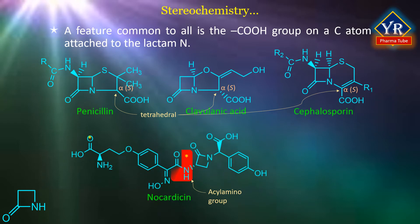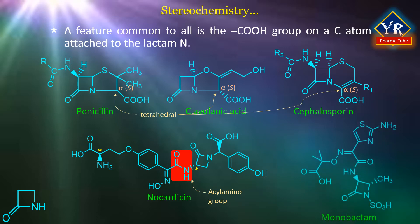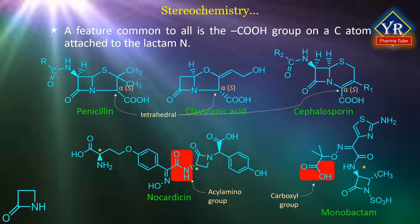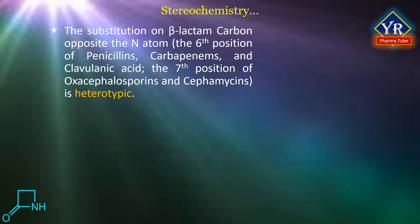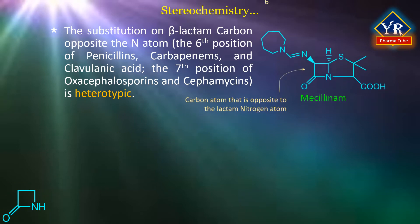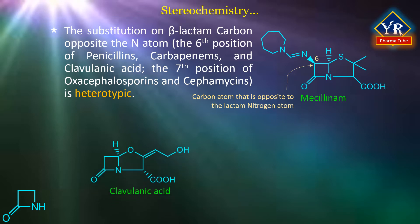Although the nocardicins do not have the fused ring arrangement, the acyl-amino and carboxyl-carrying carbon atoms both have configurations congruent with the corresponding stereochemical centers of the other known structures in this group. The monobactams constitute a notable exception to the requirement for a properly positioned carboxyl group. The substitution pattern on the beta-lactam ring carbon opposite the nitrogen atom, i.e. the sixth position of penicillins, carbapenems and clavulanic acid, and the seventh position of oxocephalosporins and cefamycins, is heterotypic.